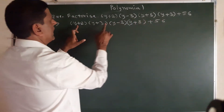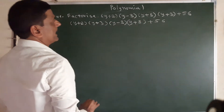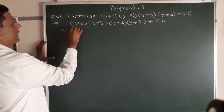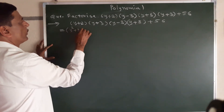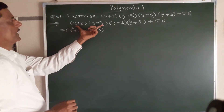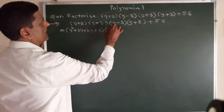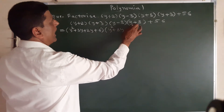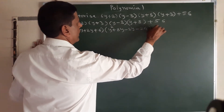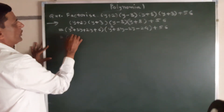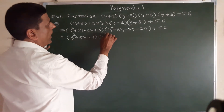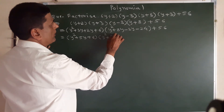We take the first and last terms together and the remaining two together. The first pair: y·y squared plus y·3 plus 2·y plus 2·3 gives y squared plus 5y plus 6. Similarly the second pair: y squared plus 8y minus 3y minus 8·3 gives y squared plus 5y minus 24, plus 56.